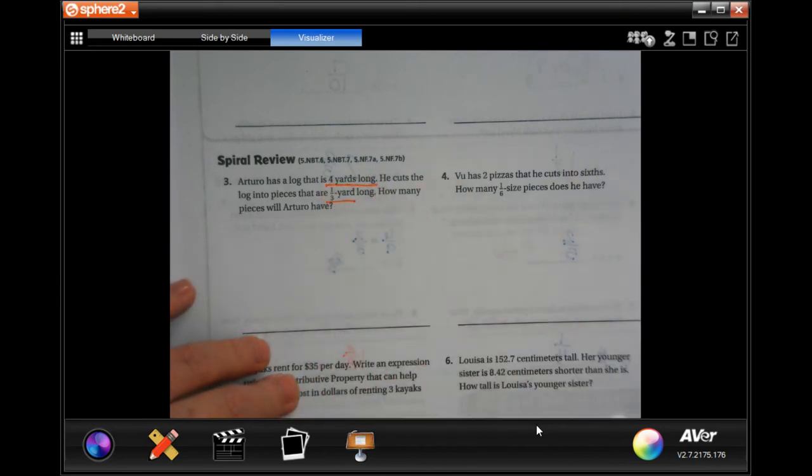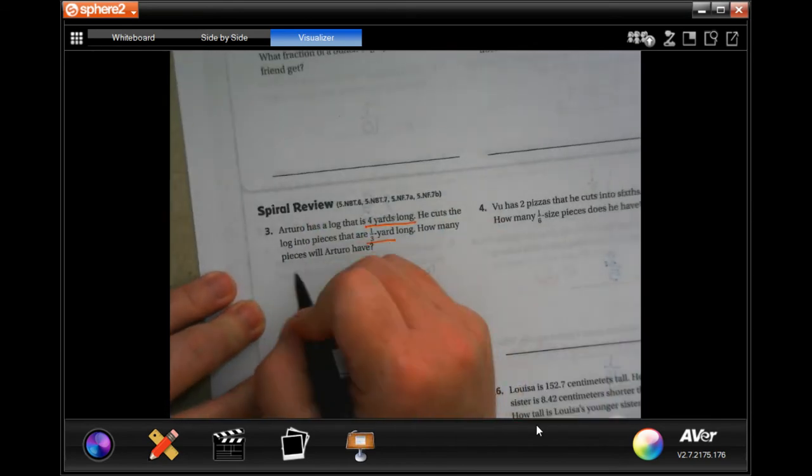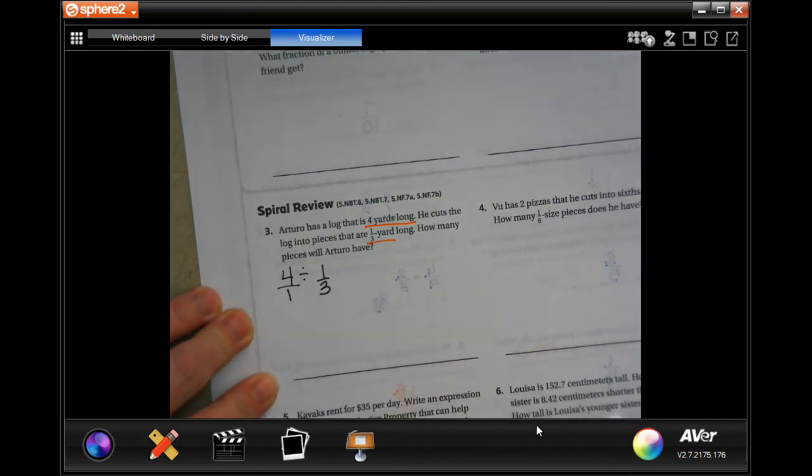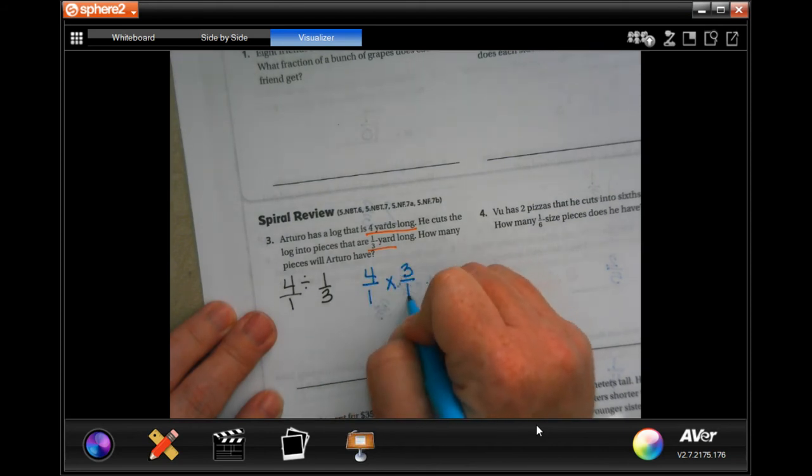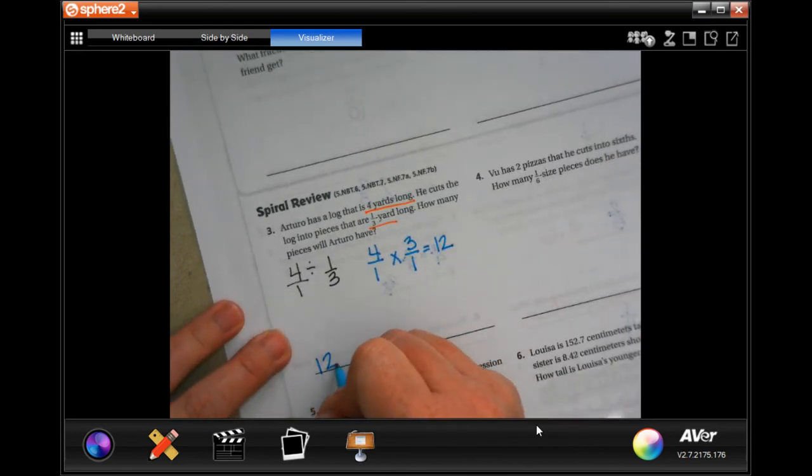So we have four divided by one third. Now four is not a fraction, I'm going to put it over one. So we are going to keep, change, and flip. Four times three is twelve. Twelve pieces.